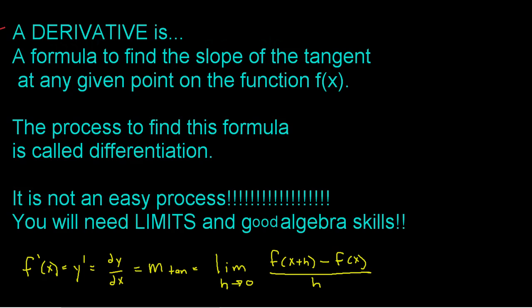To find f prime of x — the derivative — to find y prime, to find dy over dx, to find a formula for the slope of a tangent line at any given point on the function, you need to use this limit idea. We're going to find the limit as h approaches 0 of f of x plus h minus f of x, all divided by h.